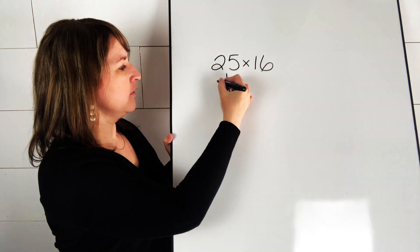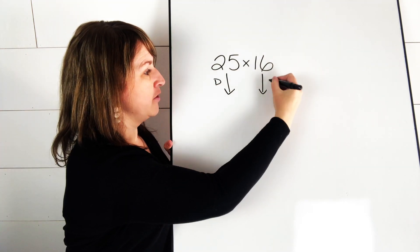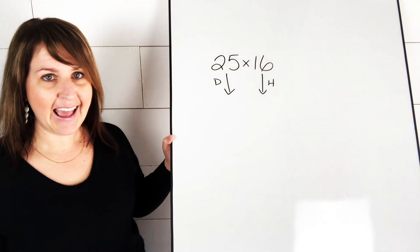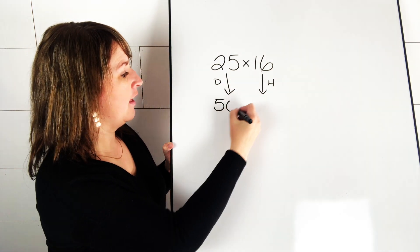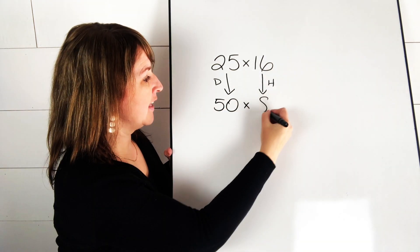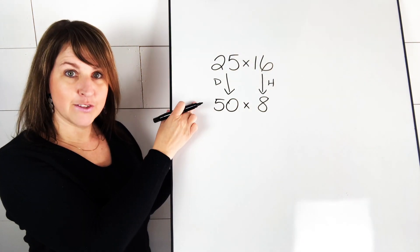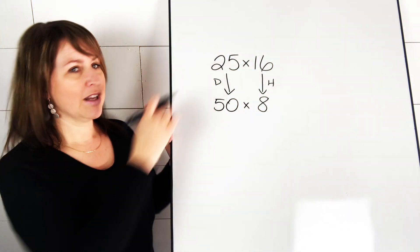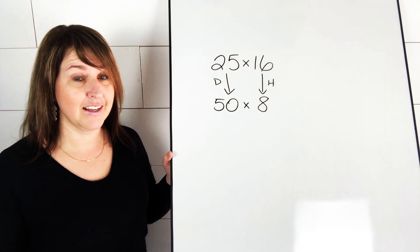So for this one, let's double the 25, which means that we have to divide the 16 in half. So double of 25 is 50, and then half of 16 is 8. So this gives us 50 times 8. Now, is this easier to solve? Is 50 times 8 easier to solve than 25 times 16? I personally think it is.